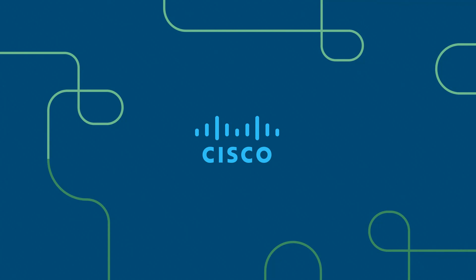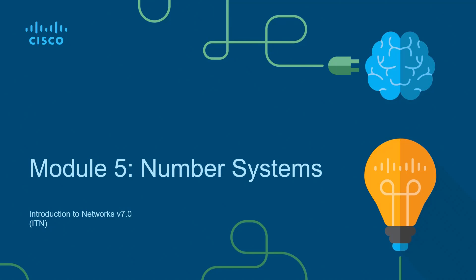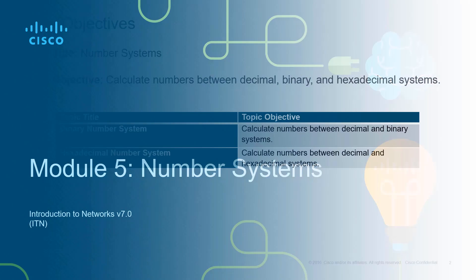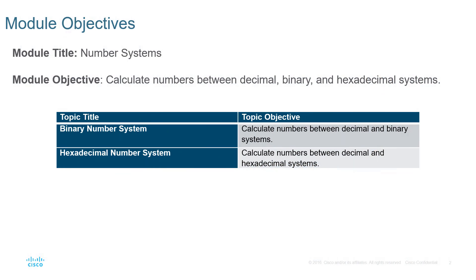Welcome to my Introduction to Networking course, typically abbreviated ITN. This will be for the CCNA version 7 curriculum. Welcome to lesson 5 — we're talking about numbering systems. That's going to be the different numbering systems we'll be interacting with, like binary, hexadecimal, and decimal. The big three are decimal, that's base 10; binary, which is base 2; and hexadecimal, which is base 16.